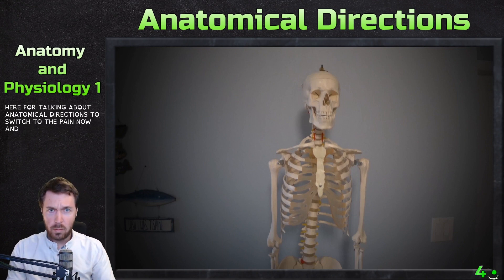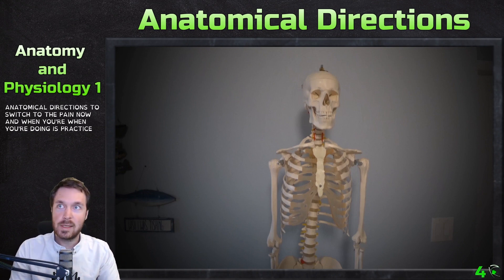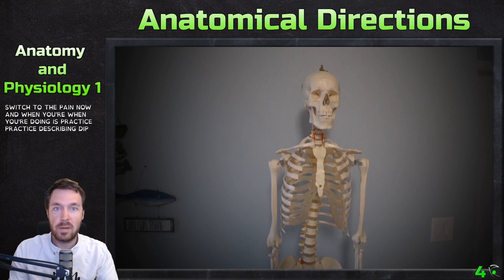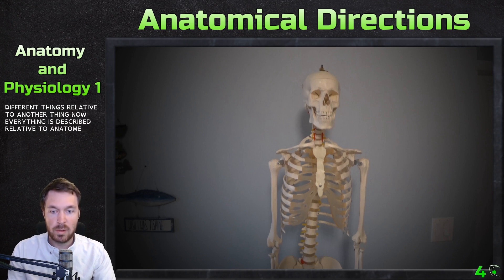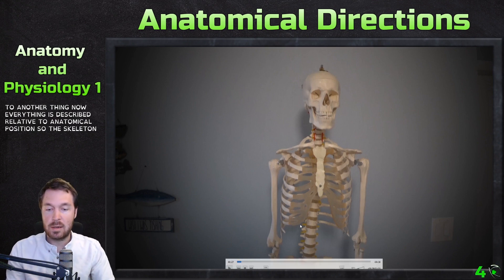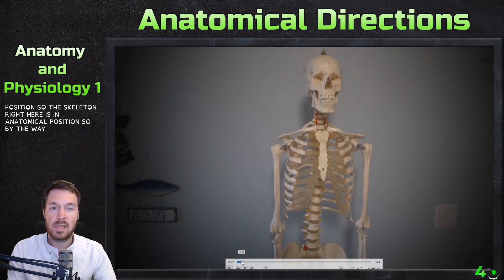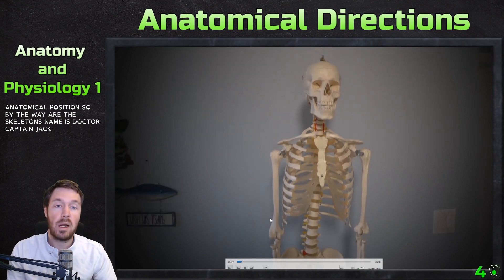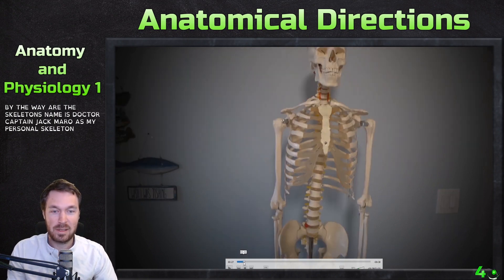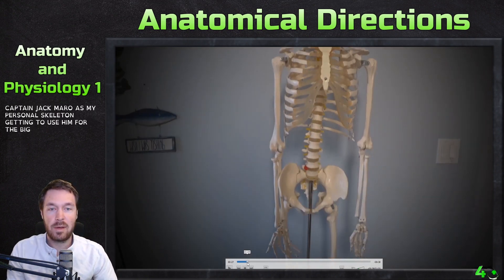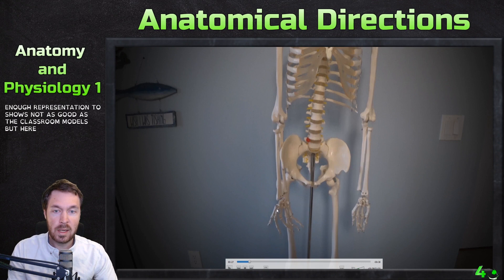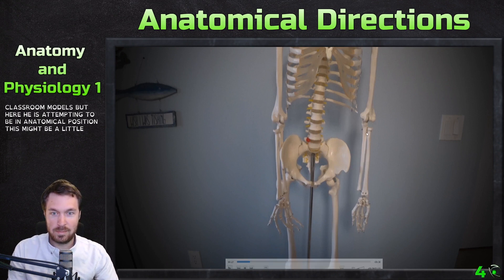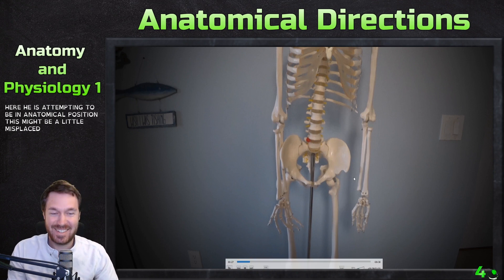So I'm going to switch to the pen now. When you're doing this practice, practice describing different things relative to another thing. Everything is described relative to anatomical position. This skeleton right here is in anatomical position. By the way, the skeleton's name is Dr. Captain Jack Marrow — that's my personal skeleton. He's not perfect, but he's a good enough representation. It's not as good as the classroom models, but he is attempting to be in anatomical position.